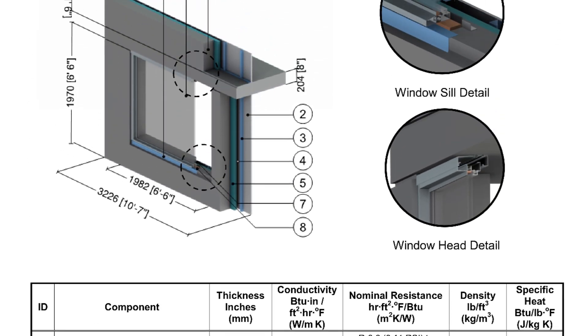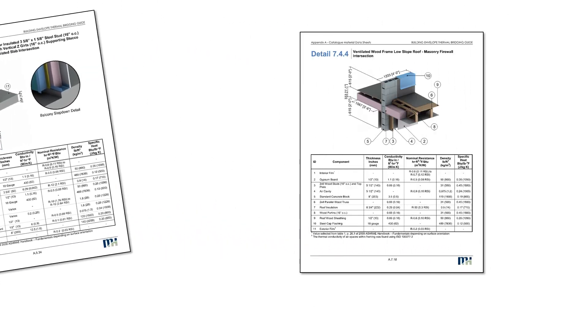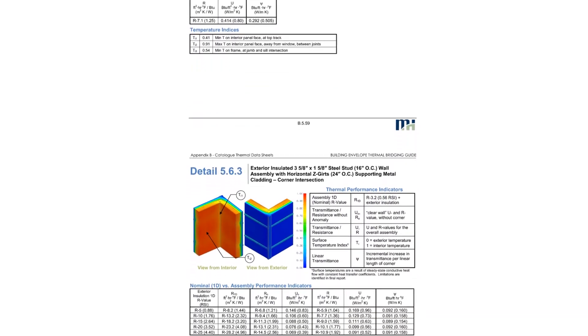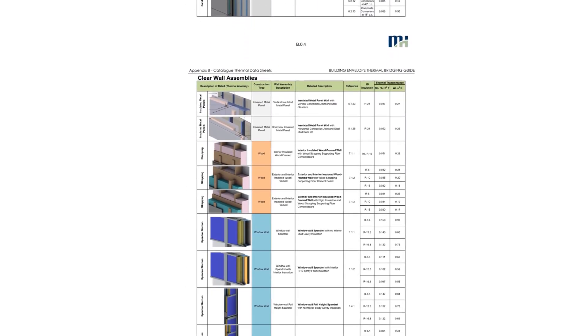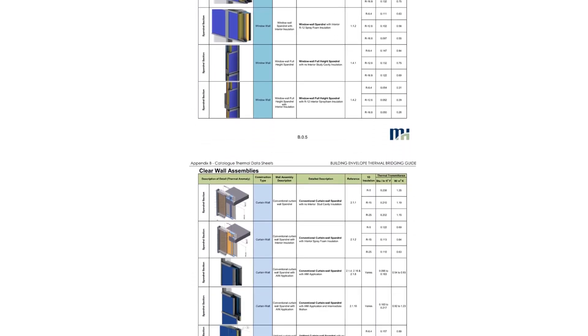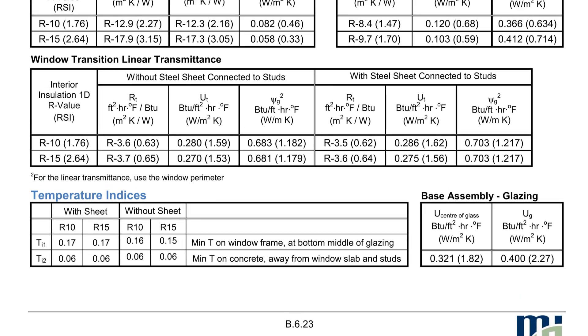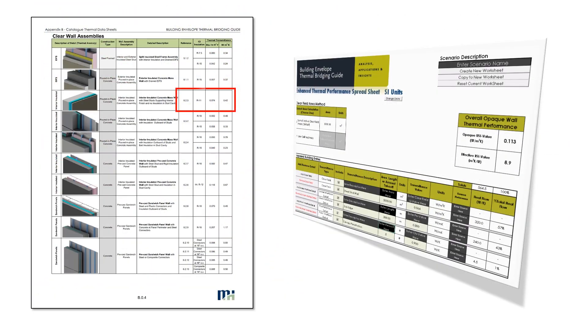The database contains all the information needed to include specific details in calculations. A component can be taken directly out of the database to be used in detailing, or the performance of a project detail can be estimated based on similar ones found in the database. Appendix A covers the material data sheets for each detail, including the list of components, detail images, dimensions, and material properties — you should start here first to get a good idea of what the detail will look like. Appendix B contains all of the thermal performance information, including a visual summary of all the U values, psi values, and chi values for quick reference, with more detailed information found in each of the detailed results sheets.